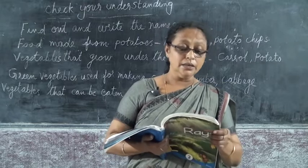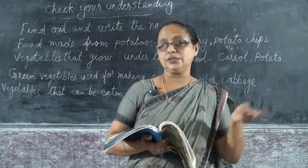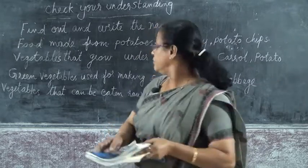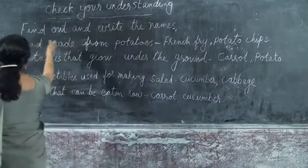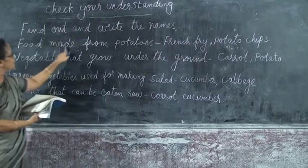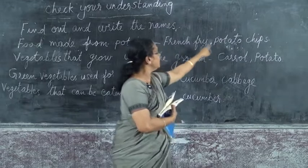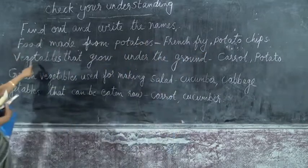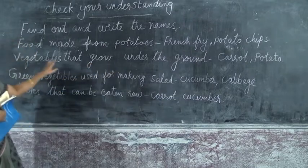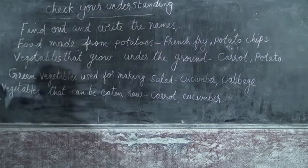Here it is written 'a vegetable that can be eaten raw.' I have wrote the two choices on the board. We can go through it. Find out and write the names. First one: food made from potatoes — french fry, potato chips. Second one: vegetables that grow under the ground — carrot, potato. I have wrote it there. You can also write ginger — your choice.